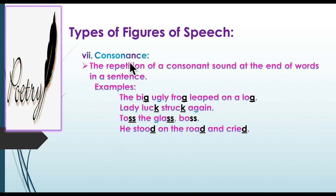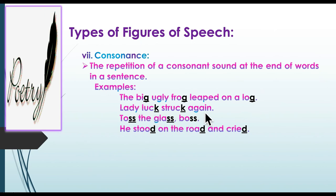Number seven is consonance — the repetition of a consonant sound at the end of words in a sentence. Unlike alliteration, which is at the beginning, consonance is at the end. Examples: 'The big ugly frog leaped on a log' — the G sound at the end of 'big,' 'frog,' 'log'; 'Lady luck struck again' — the CK sound in 'luck' and 'struck'; 'Toss the glass, boss' — the S sound at the end; 'He stood on the road and cried' — the D sound repeated. This repetition of consonant sounds at the end of words is consonance.